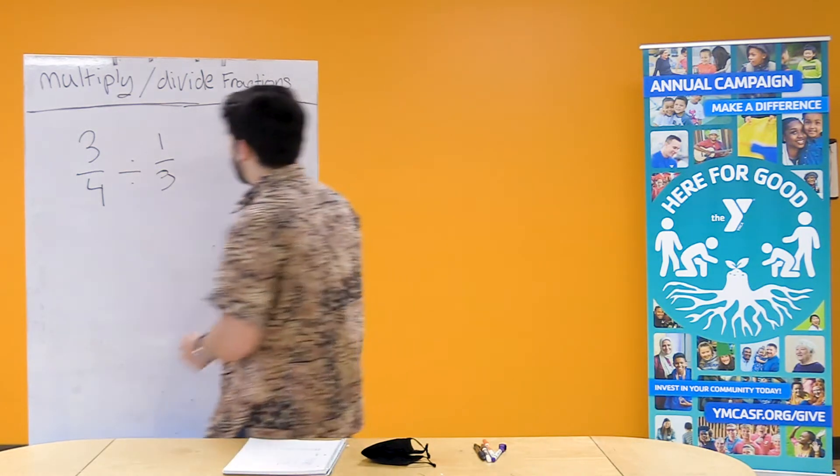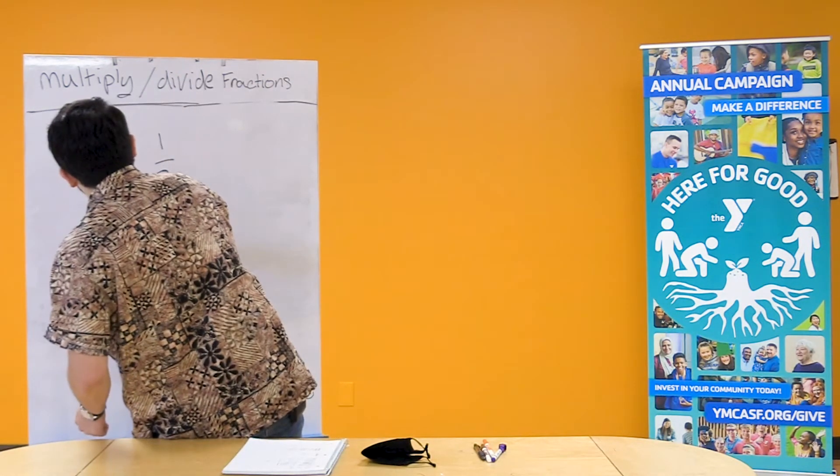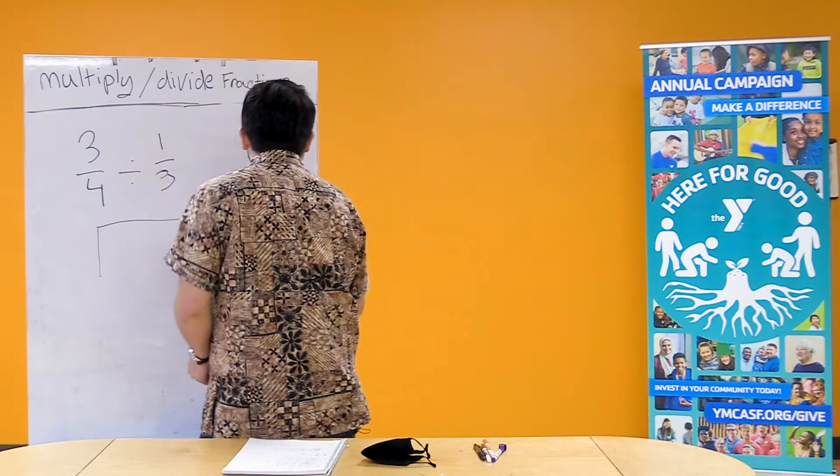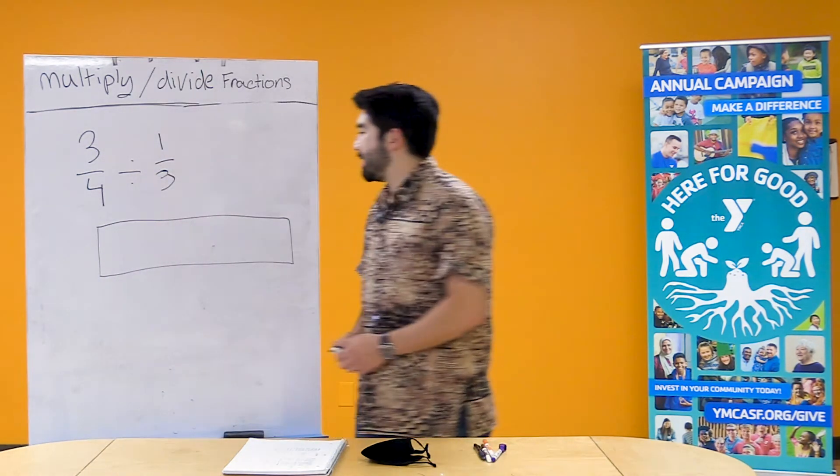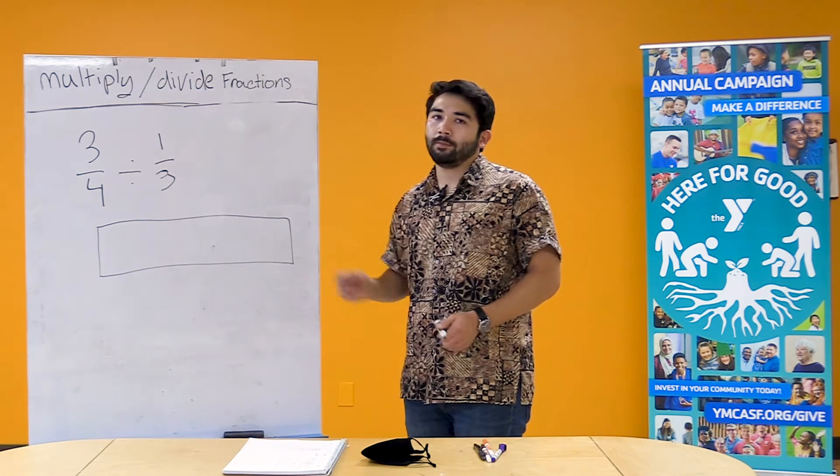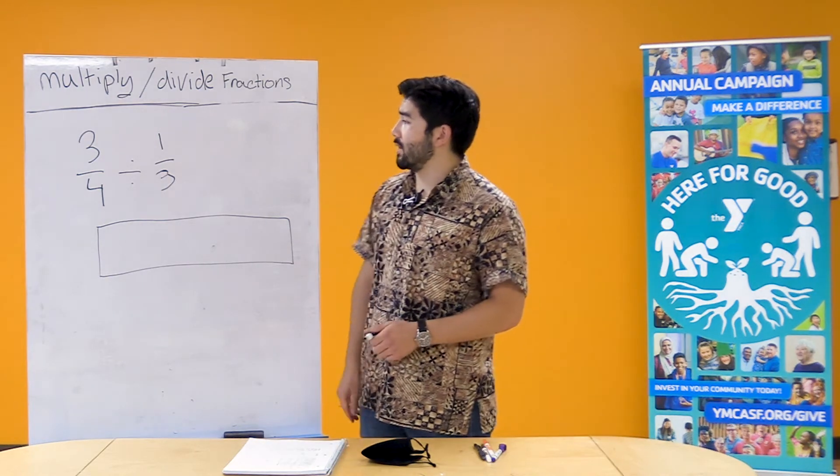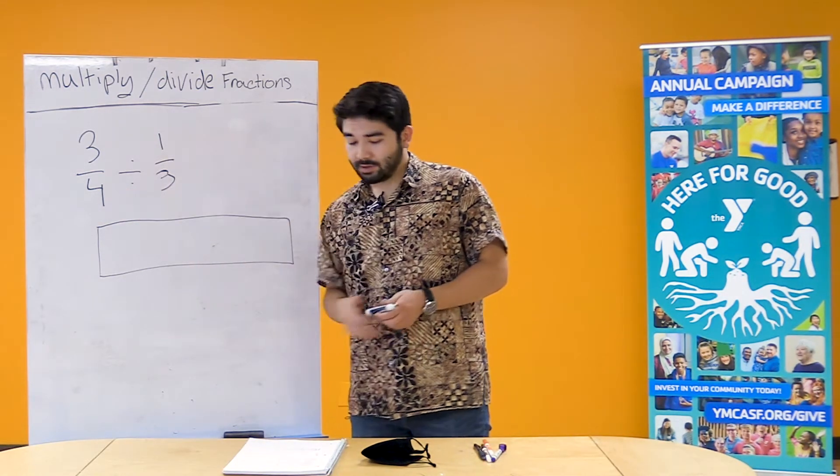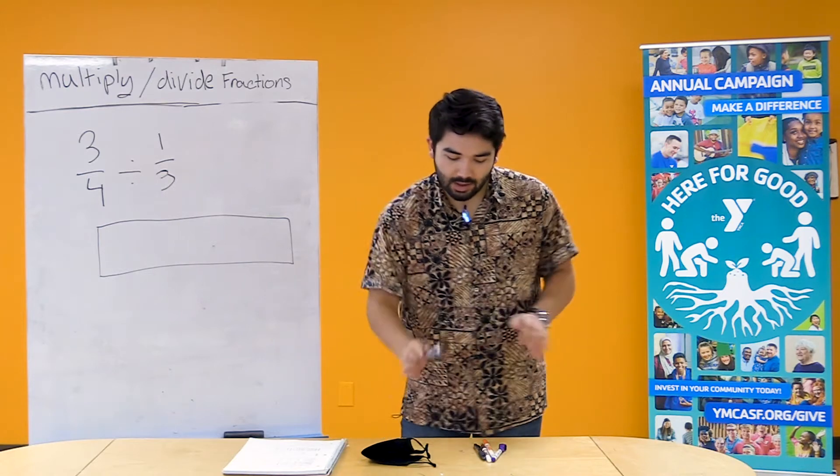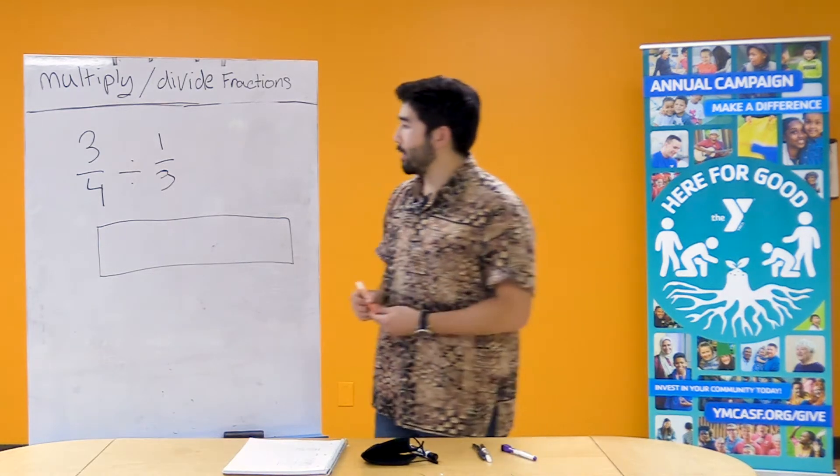So instead of using a box I'm actually gonna use a piece of tape. So this piece of tape is gonna represent one whole and I'm gonna first look at our 3/4. So what I want to do is take a marker and